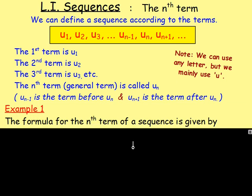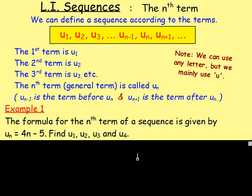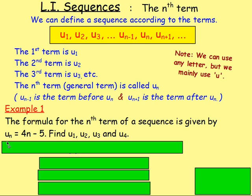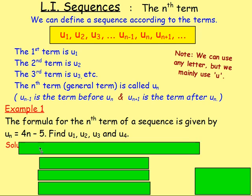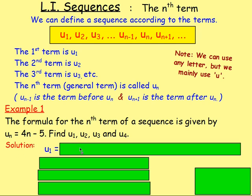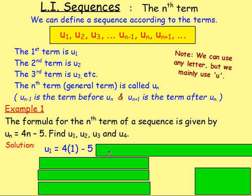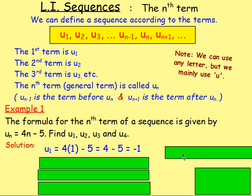Okay. Let's do one example with this. So the formula for the nth term of a sequence is given by UN equals 4N minus 5. So find U1, U2, U3, and U4. So what you want to think is, right, well, let's go through it in order. So U1 is going to be equal to. Well, I'm replacing N with 1. So over here on the right-hand side of this formula, replace N with 1. So it's 4 times 1 take away 5, which is obviously 4 take away 5, which is negative 1.